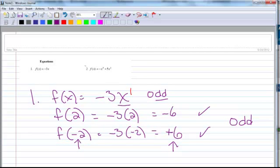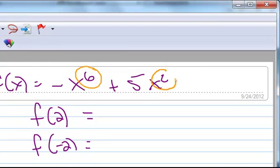Let's go ahead and do number 2 here. So this one is f(x) equals negative x to the 6th plus 5x squared. I'll leave this up to you to go ahead and put in 2 and see what you get. Put in negative 2 and see what you get, and determine if it's odd or if it's even. But one thing I'm going to do with you is look at the powers. So I've got a 6, and I've got a 2. Both of those are even powers, so this is an even function.